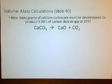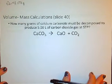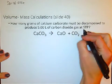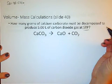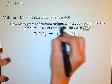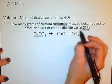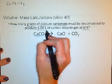Okay, slide 40. We've seen volume to volume, we've seen how simple that is, so let's look at something a little bit different. We see that STP, standard temperature and pressure. It's saying how many grams of calcium carbonate must be decomposed to produce five liters of carbon dioxide.